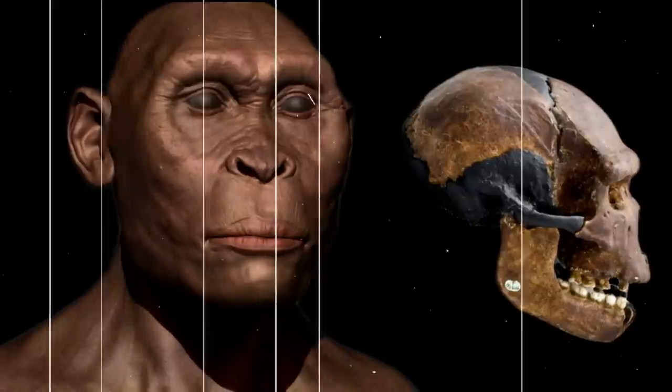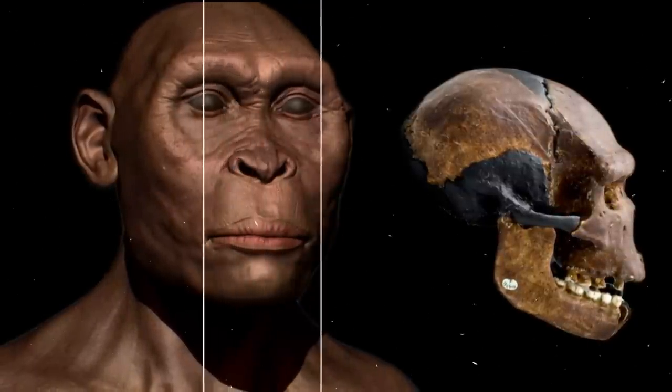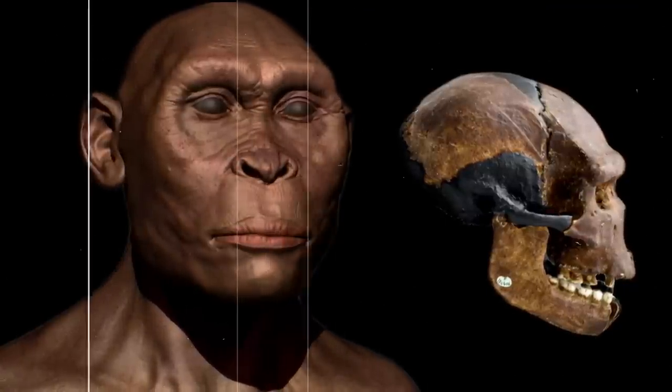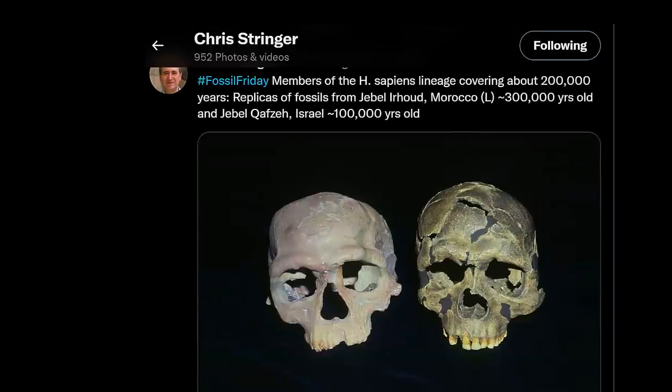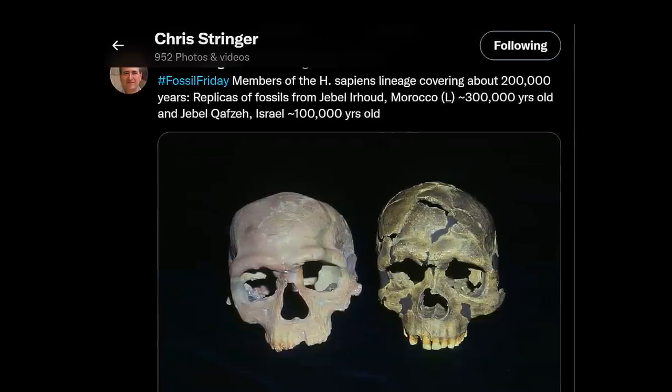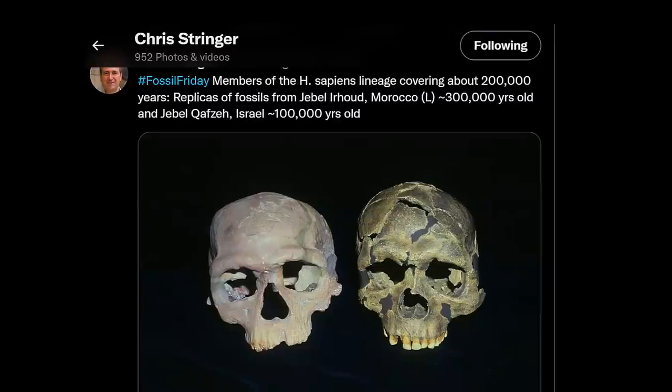There was never a single center of origin in Africa. The anatomical diversity of these composite humans has inevitably stoked debates about which belong to our species and which don't. Some fossils are widely accepted as being Homo sapiens, notably Omo-1 and the Herto hominins.